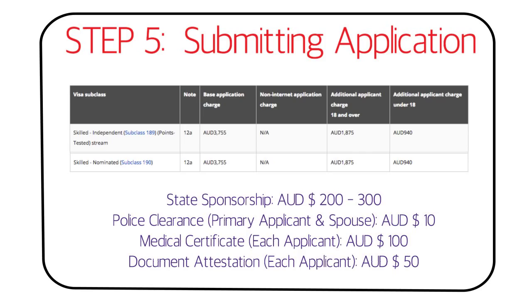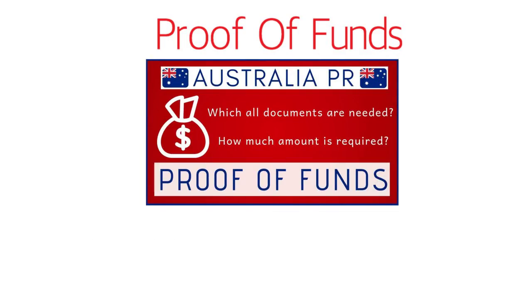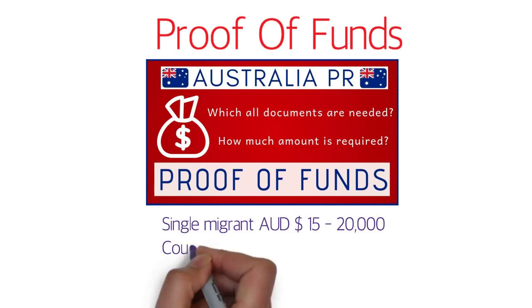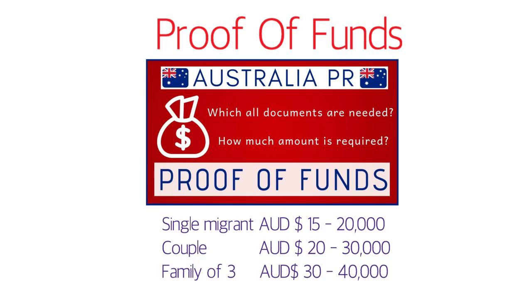A medical certificate costs around AUD $100 per applicant, and unlike police clearance, it is required for children as well. So for a family of three you'd end up paying around $300 for medical certificates. Document attestation costs around $50 per person for the primary applicant and spouse. Regarding proof of funds — I made a separate video on this — you may need to show savings upon arriving in Australia. Roughly: single applicant AUD $15,000–$20,000; couple AUD $20,000–$30,000; family of three AUD $30,000–$40,000.